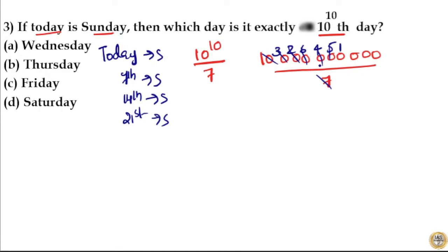50 by 7 gives you remainder 1, again 10 by 7 gives you remainder 3, 30 by 7 gives you remainder 2, 20 by 7 again gives you remainder 6. That is 60 by 7 gives you remainder 4. So here remainder is 4.